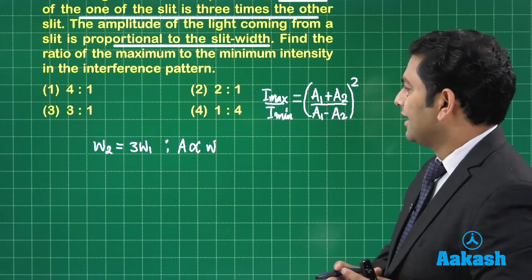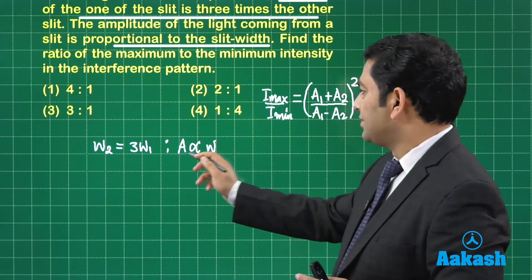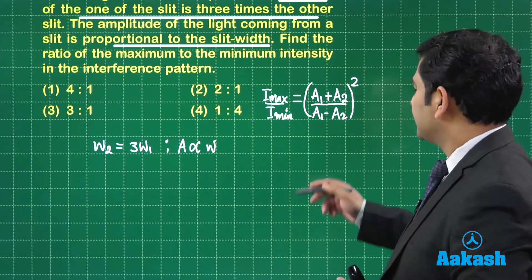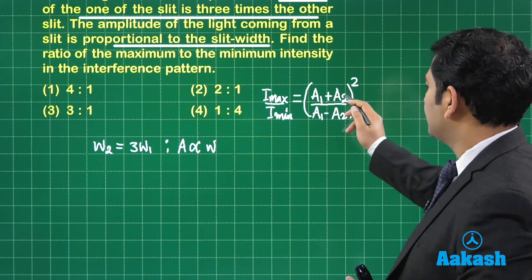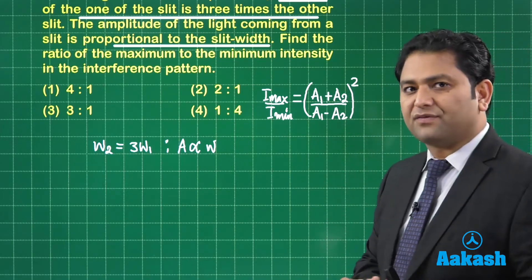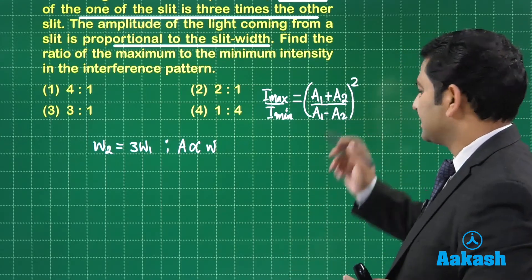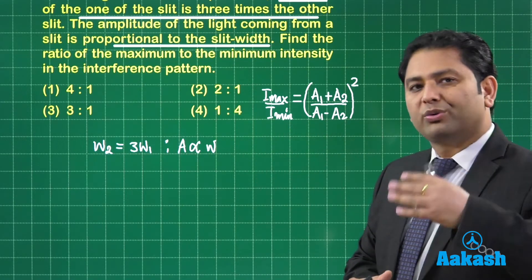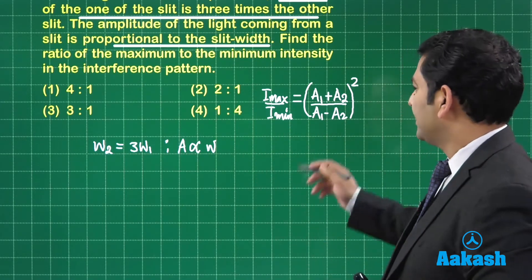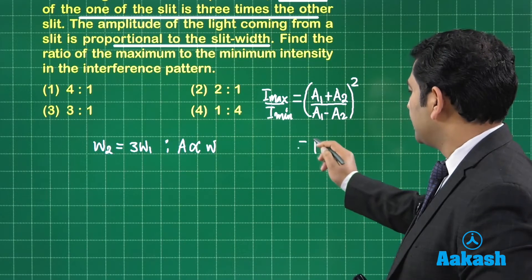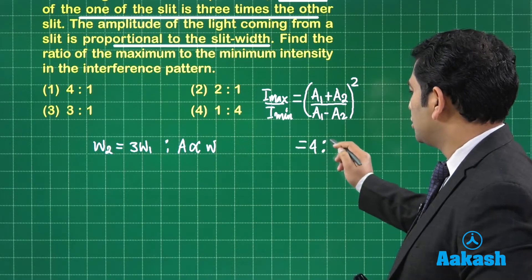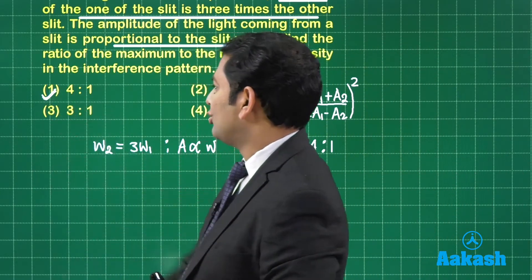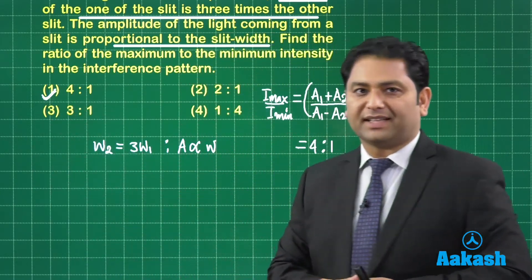Now you could easily see that amplitude is directly proportional to W. So that means one will be 3W plus W. So upstairs is 4W. Downstairs is 2W. So that gets cancelled to become 2, which in turn will get squared. So that is going to be 4 is to 1. So 4 is to 1, we find it in option number 1. So option number 1 is correct for this.